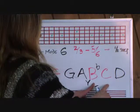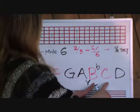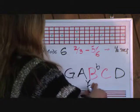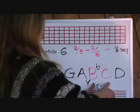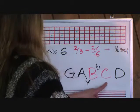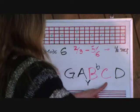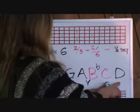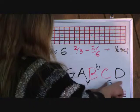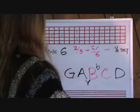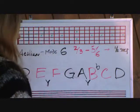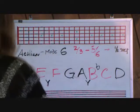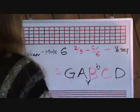Sixth to seventh step, B flat to C, needs to be a full step — that's correct, so you leave that alone. Seventh step of the scale, C to D, needs to be a whole step — it is a whole step, so you leave that one as it is. Moving on to E Aeolian.